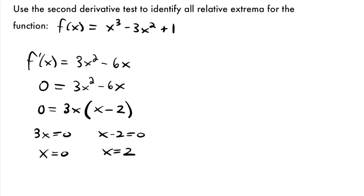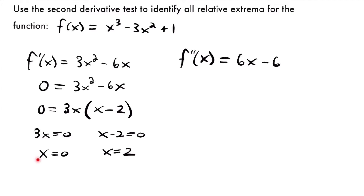Unlike the first derivative test, the second derivative test requires that we also take the second derivative, and that's what we're going to use to test these values. So f''(x) is going to be equal to 6x — that's 2 times 3 with the exponent subtracted by 1 — and then minus 6, because the derivative of negative 6x is negative 6. Now we have our second derivative. All we have to do is plug our critical values into the second derivative and see if the output is positive or negative.